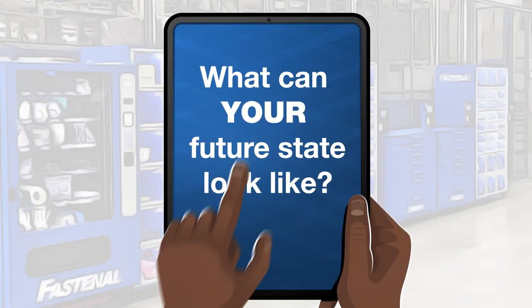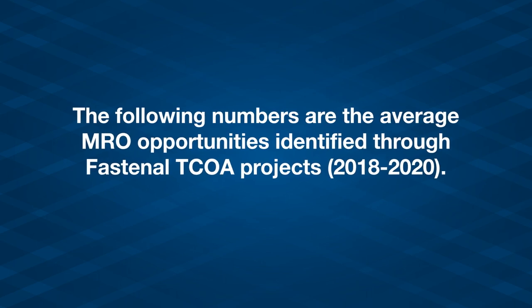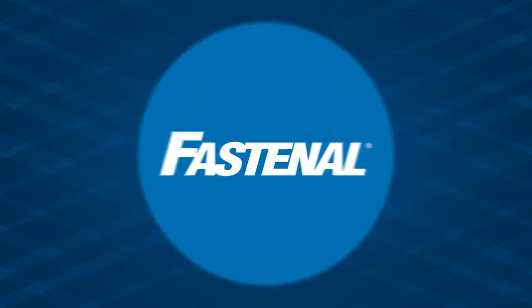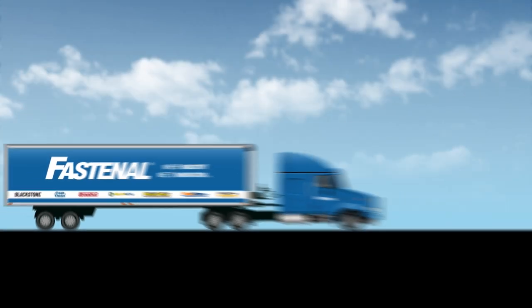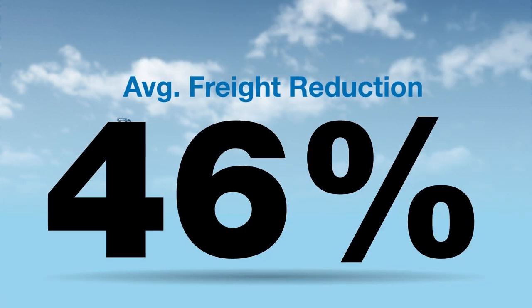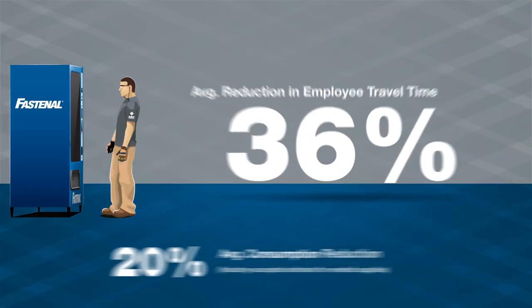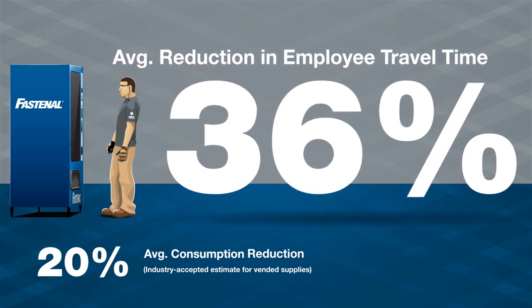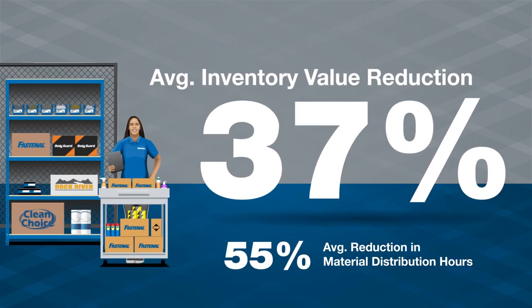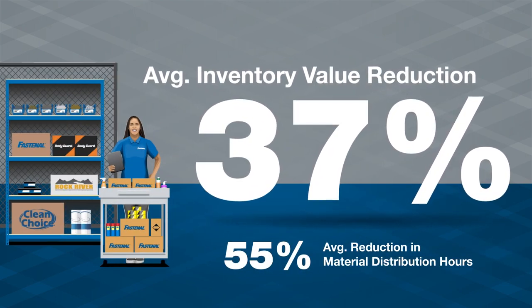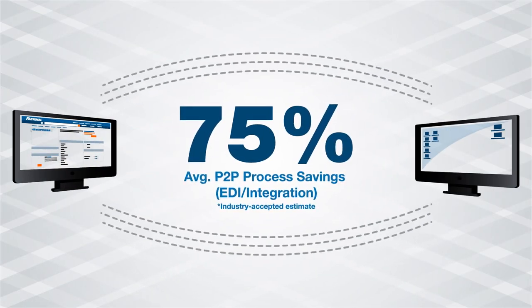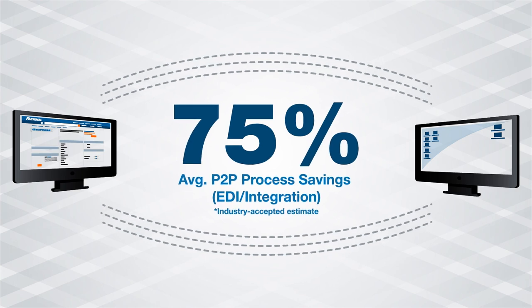What can that future state look like? Every project and customer site is unique, but here are some T.C.O. impacts that can be realized for in-scope products and processes: improved pricing through vendor consolidation; reduced freight expenses with less expediting and lower rates through Fastenal's transportation system; increased productivity and reduced consumption, both powered by digital point-of-use technologies; reduced assets and improved labor utilization courtesy of a Fastenal-managed inventory program; fewer hours spent sourcing; and reduced processing costs in the procure-to-pay cycle through EDI or other integration solutions.